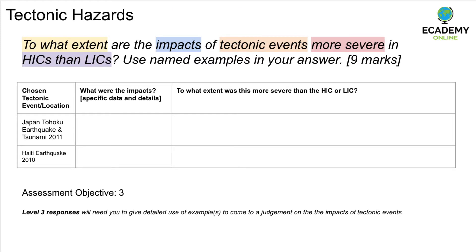For every single exam question, always break down the question carefully first and make some notes before answering — this is really important for nine mark questions. You may want to use two case study examples: the Japan Tohoku earthquake and tsunami of 2011, and the Haiti earthquake of 2010, or alternative high income and low income examples. Write bullet points on specific impacts, and whether you thought it was more severe in the HIC or LIC. This will help you structure your paragraphs and serves as excellent revision.